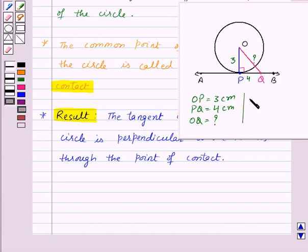Then OQ will be equal to square root of 3 squared plus 4 squared using Pythagoras theorem. This will be equal to 5 cm.